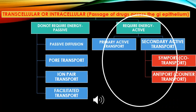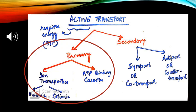Active transport processes require energy from ATP to move drug molecules from the extracellular to the intracellular region. They are of two types: primary active transport and secondary active transport. Primary active transport is categorized into ion transporters and ATP-binding cassette transporters, or ABC transporters.